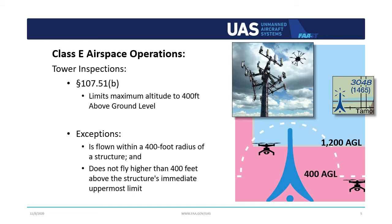In this example, flying at 1865 feet means that you are operating in Class Echo airspace. And remember, Class Echo does not require an airspace authorization under Part 107.